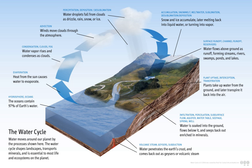Most water falls back into the oceans or onto land as rain, where the water flows over the ground as surface runoff. A portion of runoff enters rivers in valleys in the landscape, with streamflow moving water towards the oceans. Runoff and water emerging from the ground may be stored as fresh water in lakes. Not all runoff flows into rivers; much of it soaks into the ground as infiltration.